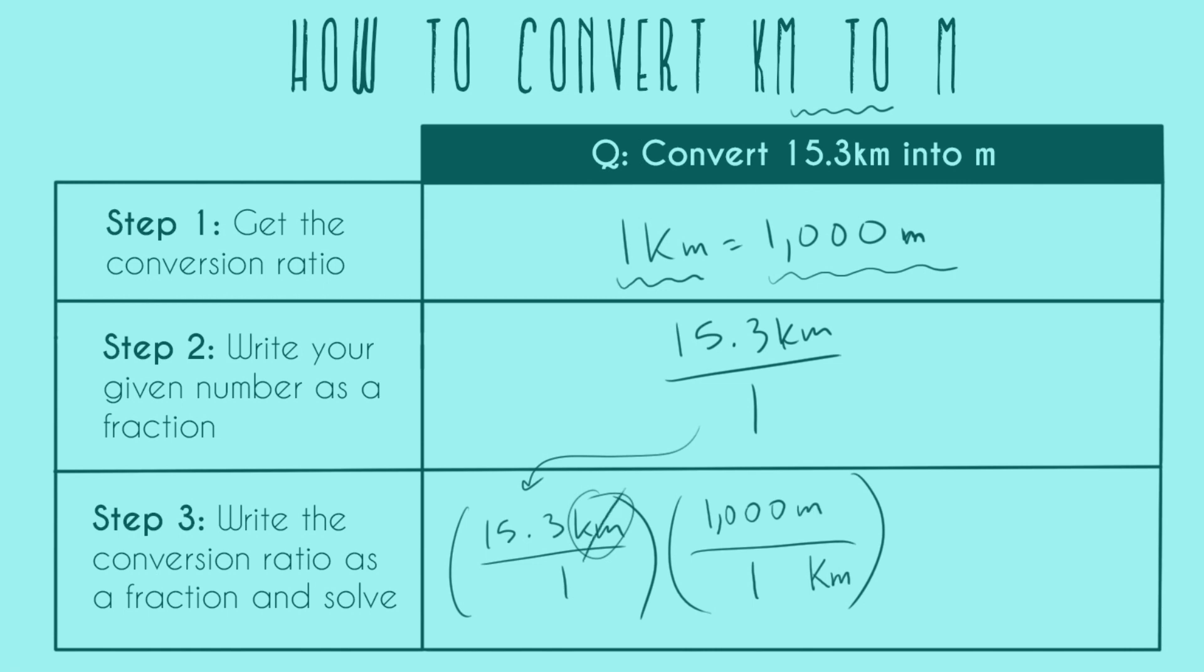So now we can go ahead and cancel kilometers. That's good. We're going to end up in meters. That's also what we want. And we can see that our math is to multiply 15.3 by a thousand. So our final answer is 15,300 meters.